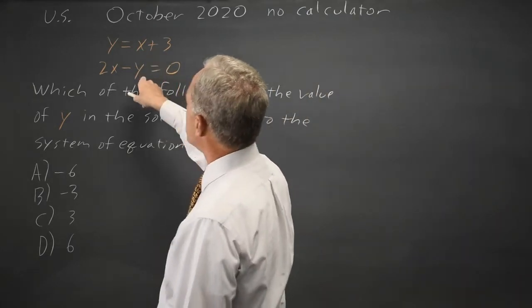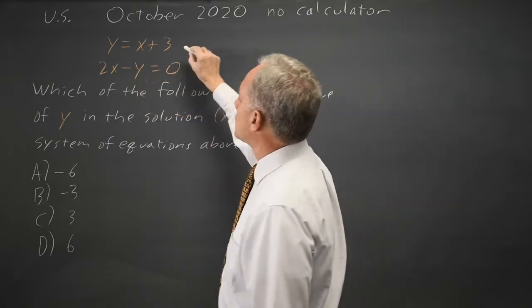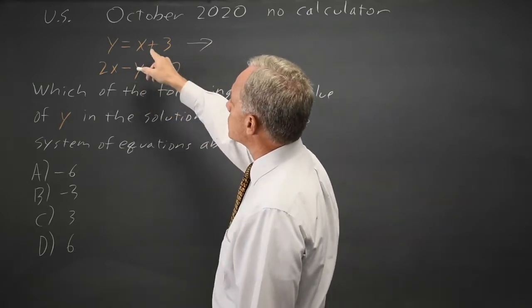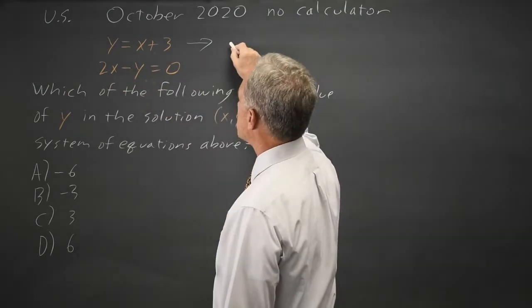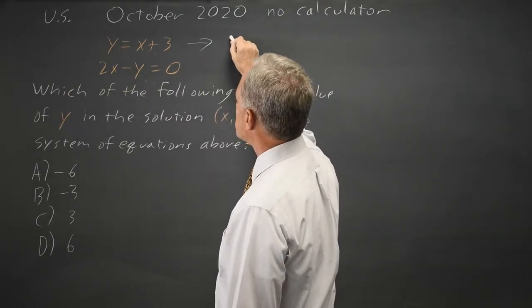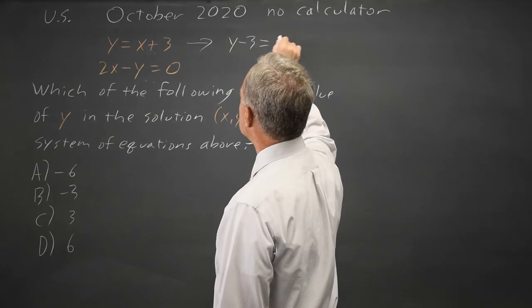To solve for y, we've got several options. I'm going to solve the first equation for x and substitute that expression in for x in the second equation. So if I subtract 3 from both sides, I get y minus 3 equals x.